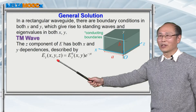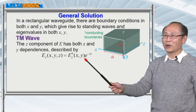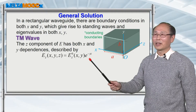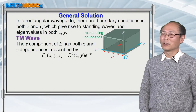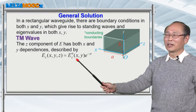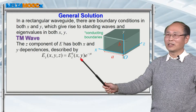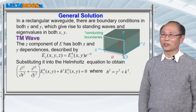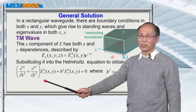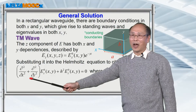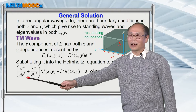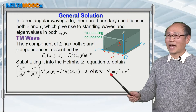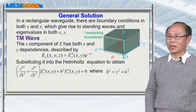The z component of electric field is going to be a function of x, y, and z, and this exponential minus gamma z tells you whether this wave is going to propagate or be evanescent along z-direction. This ez0 as a function of x, y is going to give you some standing wave solutions. Let's put this expression into Helmholtz's equation, and you have to perform the calculation in both x and y directions, giving you an eigenvalue h-squared equal to gamma-squared plus k-squared.